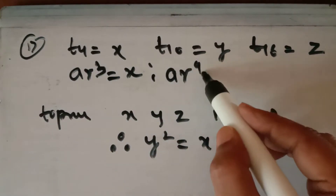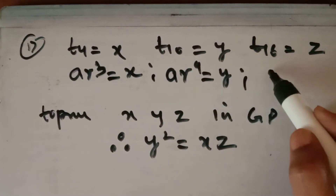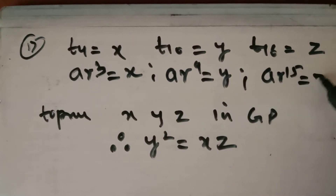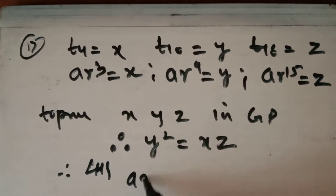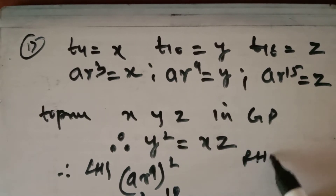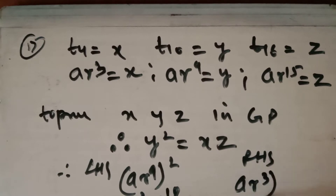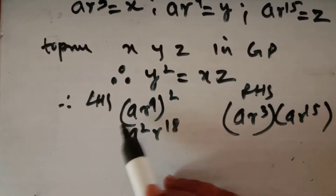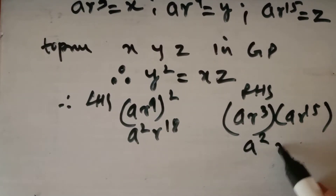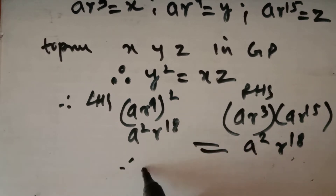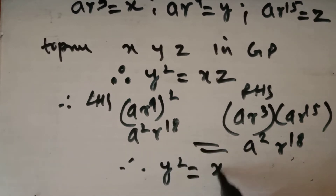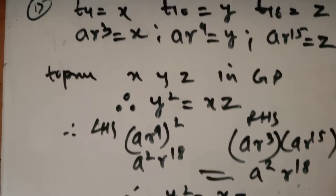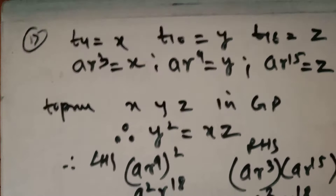If the tenth term is y, then a·r⁹ = y, and if the sixteenth term is z, then a·r¹⁵ = z. LHS: y² = (a·r⁹)² = a²·r¹⁸. RHS: x·z = (a·r³)(a·r¹⁵) = a²·r¹⁸. Both sides are equal, so y² = x·z, confirming x, y, z are in GP. This is a somewhat easy question.